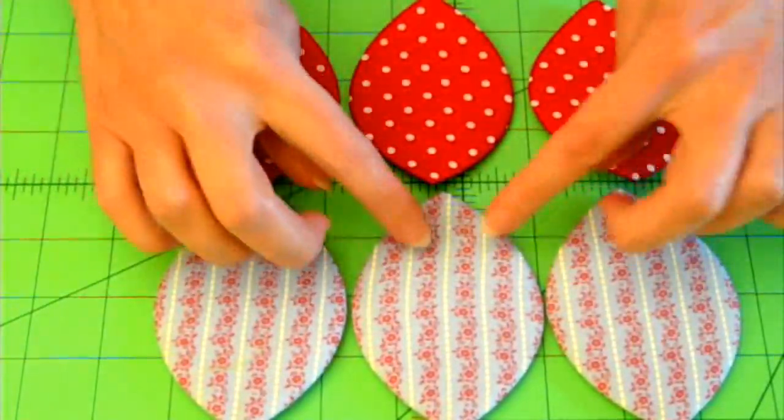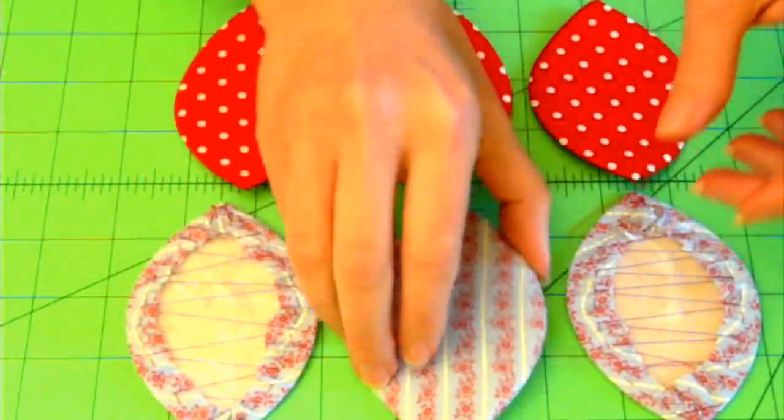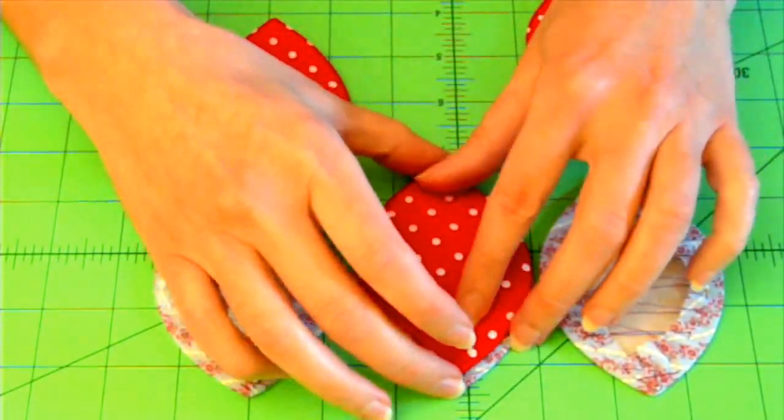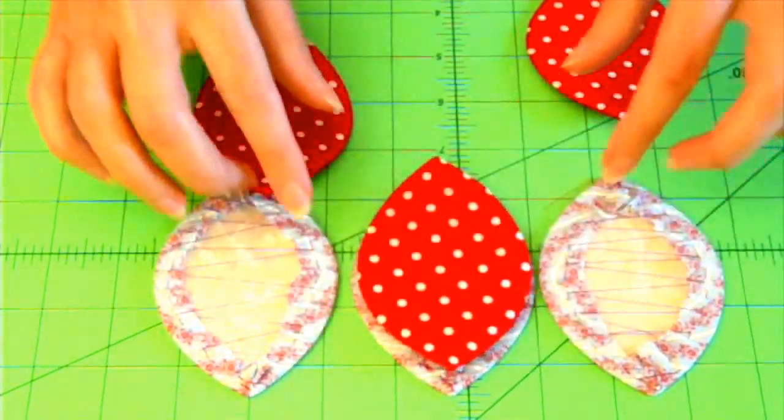The next step in our process is to stitch these together in pairs. They're going to go wrong sides together. And there's a little bit of an alignment trick to these. Here's how it works.